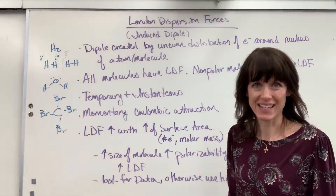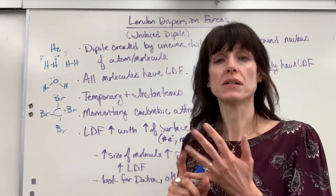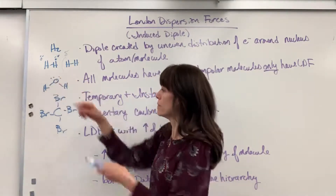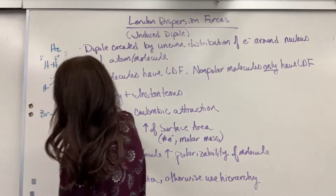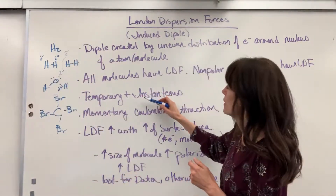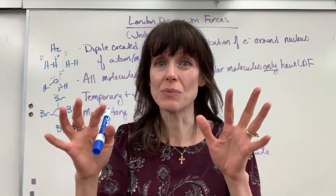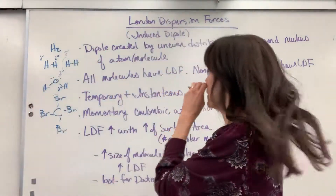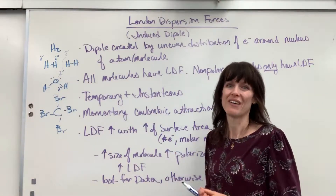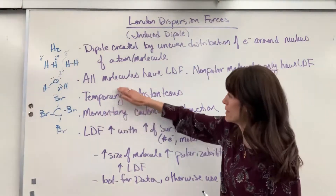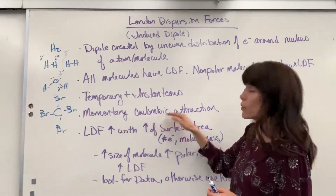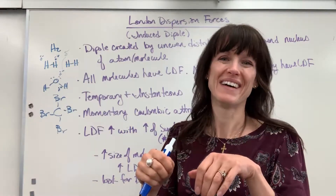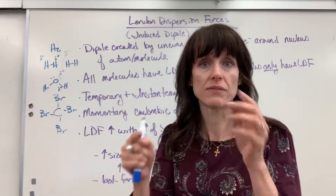They're temporary and instantaneous. In contrast, hydrogen bonding and dipole-dipole are permanent — they are a function of the electronegativity of the entire molecule. Those lone pairs make water partial negative and partial positive, always. That's permanent. However, with London dispersion, it's just the randomness of electrons moving that gives you a high density on one side, which induces a dipole on the other. They attract and then it's gone. So these are temporary and instantaneous — a momentary Coulombic attraction. It's that partial negative attracted to that partial positive: two charges attracting divided by distance.